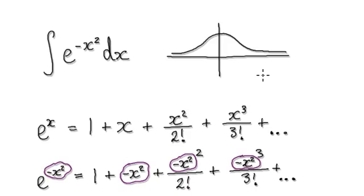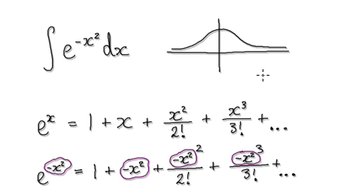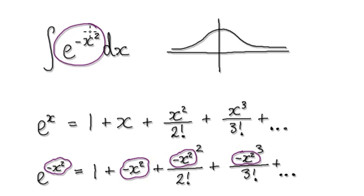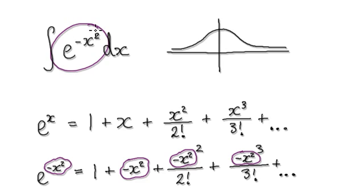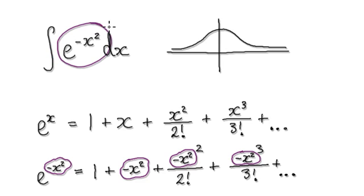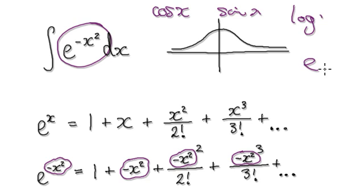The reason we're interested in this is: if I were to ask you to integrate something like e to the power of negative x squared, you can't really integrate it. The antiderivative cannot be expressed in elementary terms — not in terms of cos of x, sin, logs, or e.